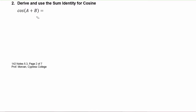What we're going to be able to do is use the difference identity that we just created. We can rewrite this as cosine of a minus negative b. The reason we want to do that is because we can now use the difference identity — we know that a minus negative b is just the same thing as a plus b, but having it in this form allows us to use that difference identity.